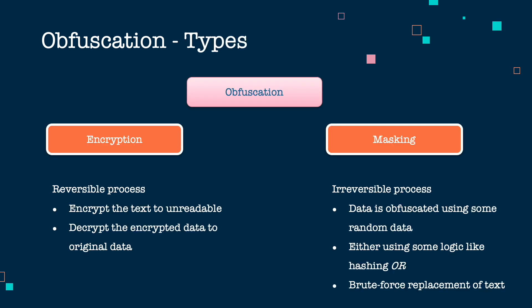Data obfuscation has many techniques. Broadly, I have categorized them into two: encryption and masking. Encryption is a reversible, two-way process. We can encrypt the data into an unreadable format, and that unreadable format can be restored back to the original data. This process of encryption and decryption is one way of protecting sensitive information.